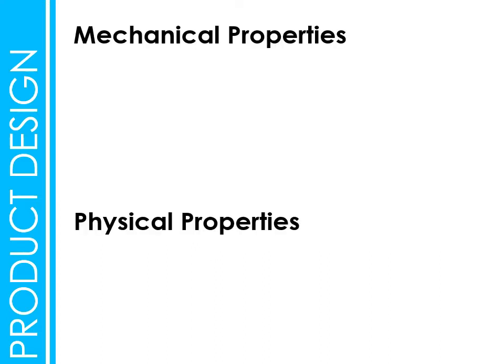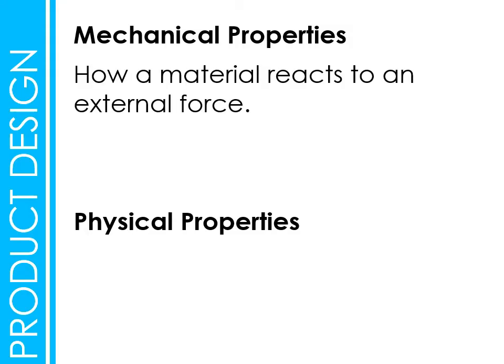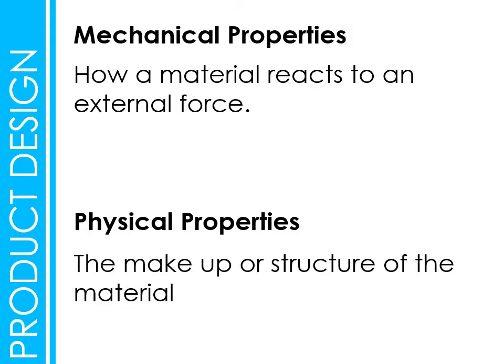There are two different kinds of properties that you need to remember. We've got mechanical properties, which are all about how a material reacts to an external force — something squashing it, something pulling on it, something bending it. Physical properties are a little bit different. These are to do with the makeup or the structure of the material that just innately gives it that kind of property.